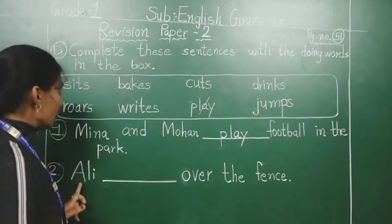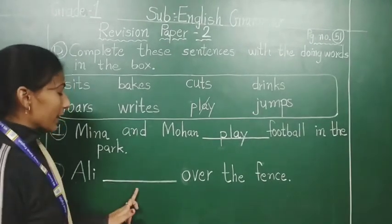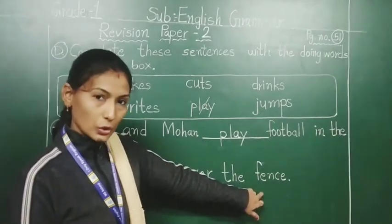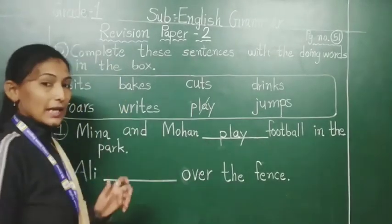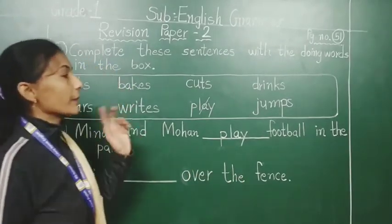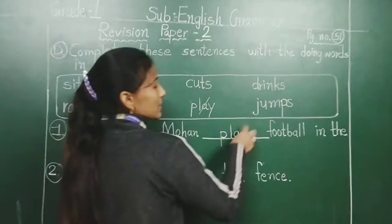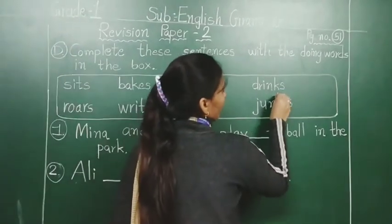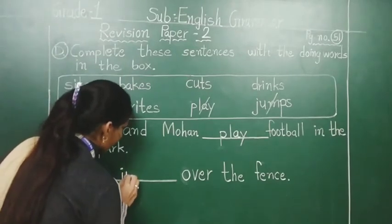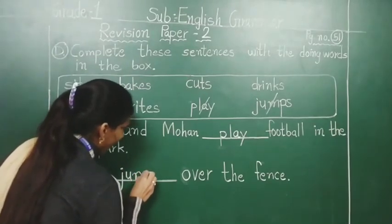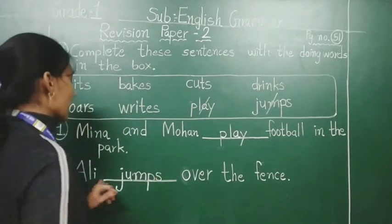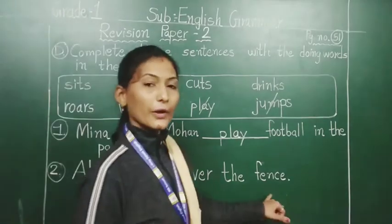Second: Ali jumps over the fence. So we will find 'jumps' and write it here: J-U-M-P-S. Ali jumps over the fence.